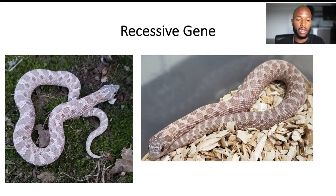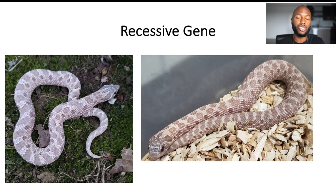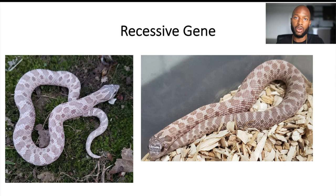We're going to be discussing the lavender gene. The lavender gene is a recessive gene and it gives a lavender color — basically a purplish hog nose snake. The cool thing about the lavender gene is it varies greatly. I've seen some with a light purplish, some are darker purple, some are even pinkish, and some are even like a sky blue. It's very variable, and some are lower expression where they don't even really look lavender at all. Because it's recessive, the snake needs one lavender gene from mom and one from dad. If it only has one, it's just going to be a carrier and look like a normal hog nose snake.